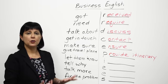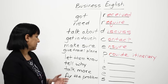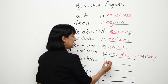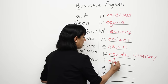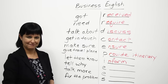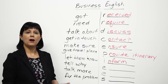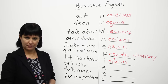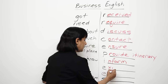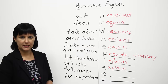'Please let them know when you'll be arriving.' Instead of that, you could say: 'Please inform them of your arrival.' Next: 'Please tell me why you've made this decision.' You could say instead: 'Please explain your decision.'